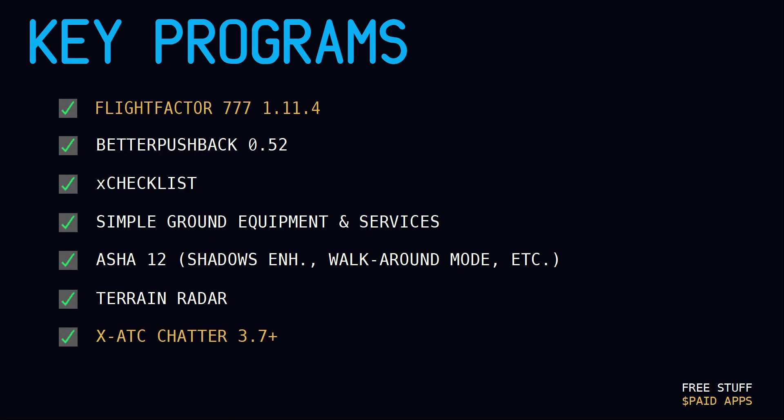Another plugin called Simple Ground Equipment and Services — it's a Fly with Lua script that just simulates some of the things you'll see on the ground. It doesn't interact with the aircraft; it just adds a little bit of eye candy. There's a new update to ASHA, the Advanced Shadows and Enhancement software. I use it to do two things: number one is make my shadows and draw distance highly optimized, as well as providing a little walk-around mode. Using the Terrain Radar plugin that's free, we're using the Boeing 737-NG style, which closely matches the real 777. Using a paid program called XATC Chatter — you can get the demo — this adds simple ATC kind of things, but it also adds some background chatter appropriate to the phase of flight and area of the world you're in. Great program.